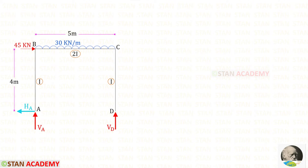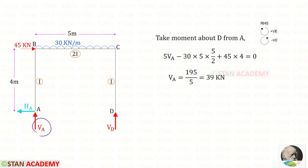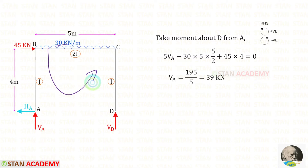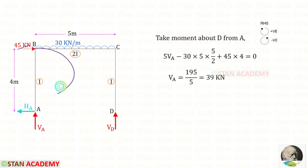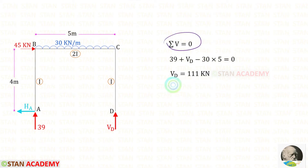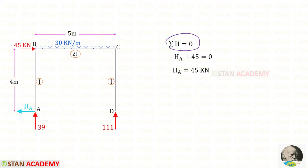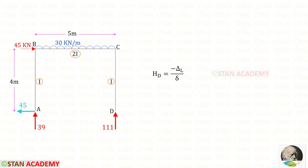You can see that I have released HD. To find VA, let us take a moment about D following the right-hand-side rule. VA is acting in the clockwise direction, so it will be positive and the distance is 5, giving 5·VA. The UDL load is acting in the anticlockwise direction, so it will be negative — with the UDL we multiply the distance and then the distance by 2. The nodal point load is acting in the clockwise direction, so it will be positive and the distance is 4. For VA we will get 39 kN. Using this rule we can also find VD and HA. For HA we will get 45 kN.